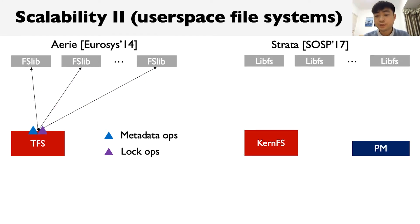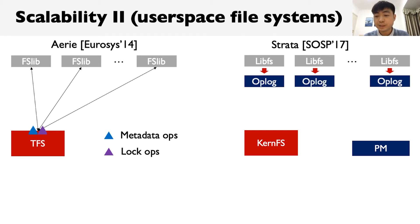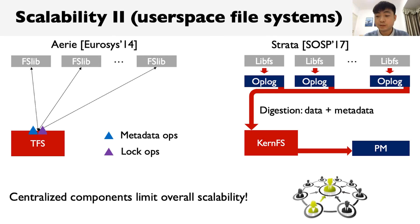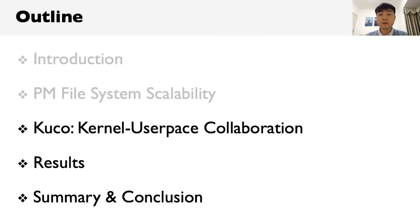Strata is a recent file system that removes this centralized service. It allows applications to append data and metadata updates to a local operation log, but still requires a background thread to digest the log data into PM space. As a result, the processing capacity of this background thread limits the overall scalability, since front-end operations will be blocked if the log is full.